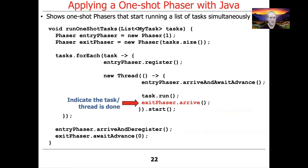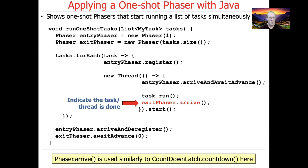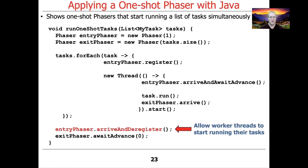After the task has run, we use the exit phaser to say 'I've arrived.' Each thread, on its way out as it finishes its processing, will tell the exit phaser that it's arrived. This essentially uses the phaser's arrive method in much the same way you might use the countDown method in Java's CountDownLatch. Outside of those threads created in the forEach method, the original calling thread — the one used to invoke RunOneShotTasks — will call the arriveAndDeregister method on the entry phaser.